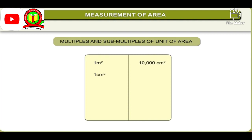Multiples and submultiples of the unit of area: 1 square centimeter is equal to 100 square millimeters. 1 are is equal to 100 square meters. 1 hectare is equal to 100 ares, which is equal to 10,000 square meters.